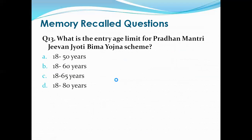Question 13: What is the entry age limit for Pradhan Mantri Jeevan Jyoti Bima Yojana scheme? Options are: 18 to 50 years, 18 to 60 years, 18 to 65 years, 18 to 80 years. The right answer is A, that is 18 to 50 years. People aged 18 to 50 years can enroll in Pradhan Mantri Jeevan Jyoti Bima Yojana, and it can be renewed up to 55 years of age.